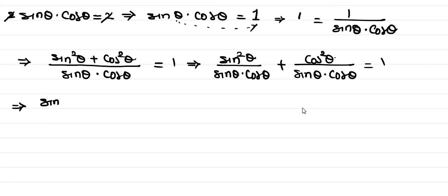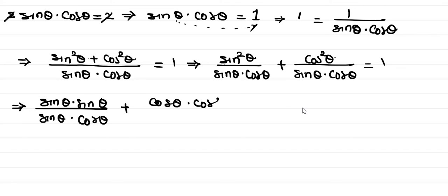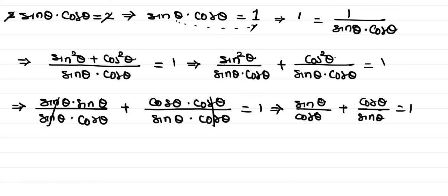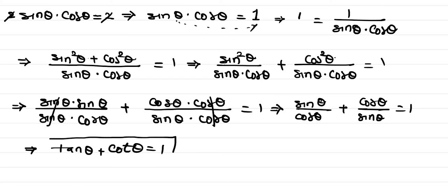Splitting the fraction, sin²θ can be written as sin θ · sin θ and cos²θ as cos θ · cos θ. After cancelling sin θ and cos θ respectively, we get sin θ / cos θ + cos θ / sin θ = 1, which is tan θ + cot θ = 1. So this is your solution.